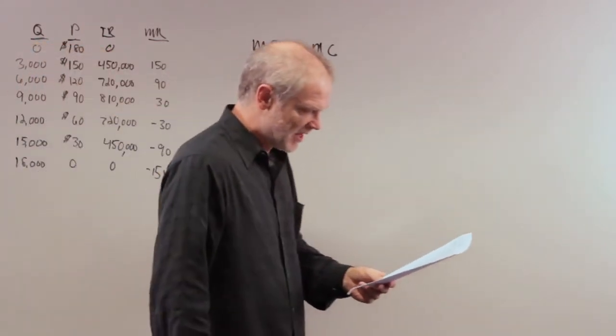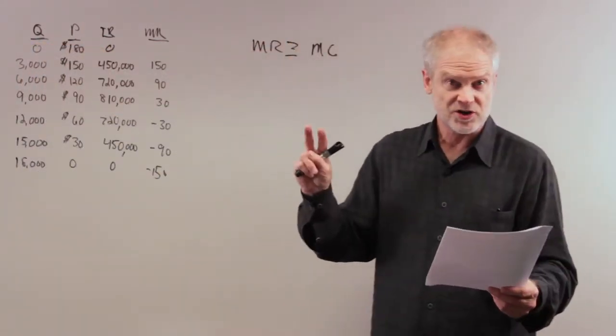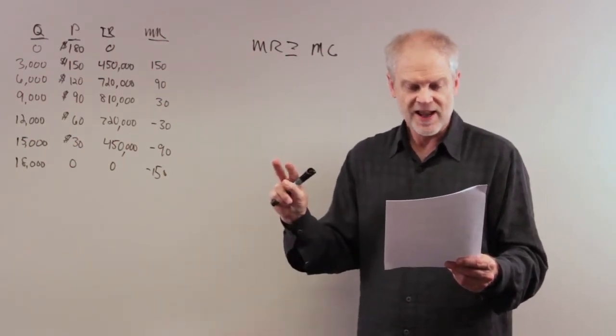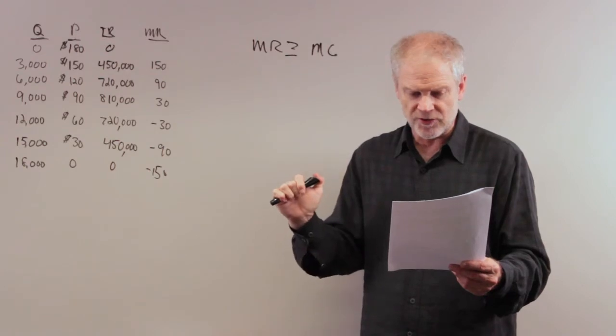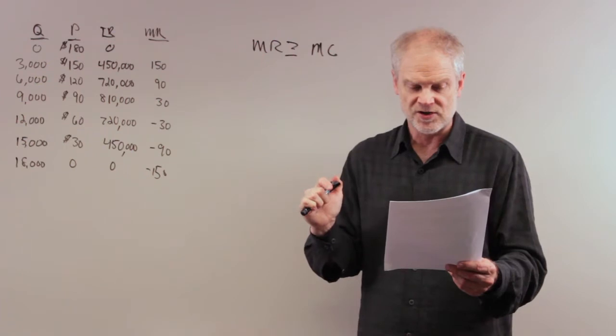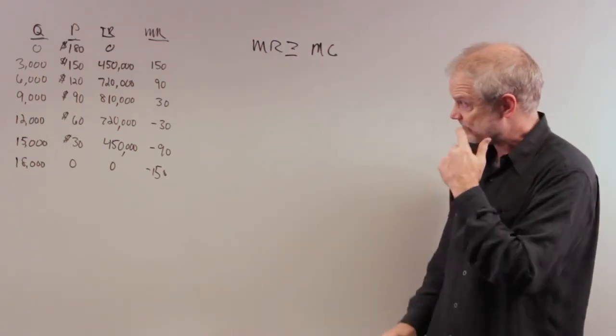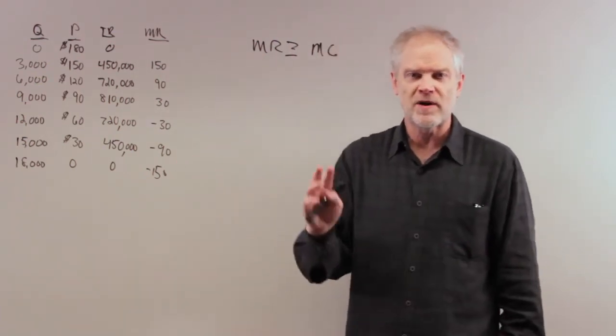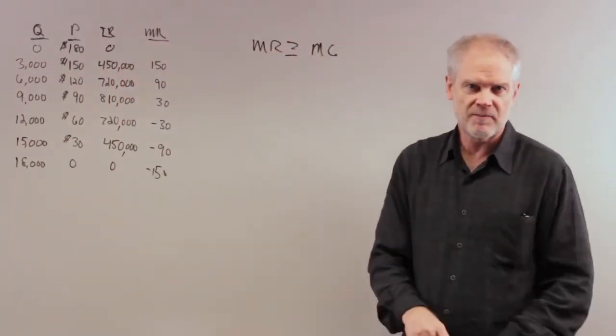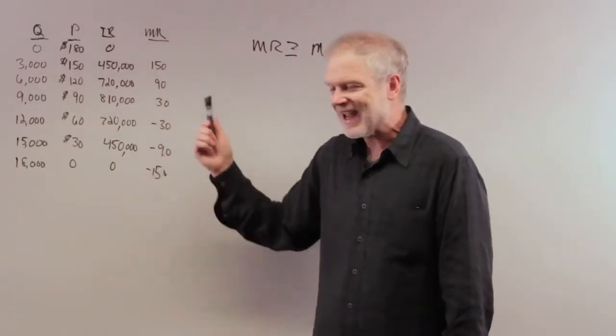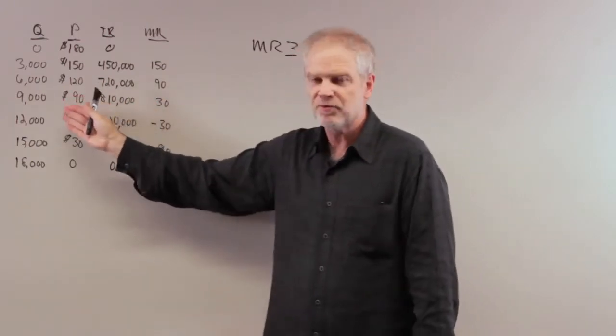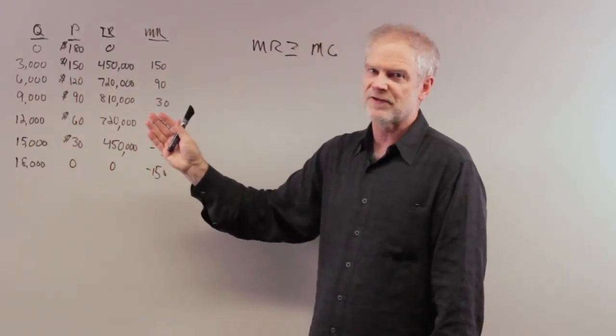Question number two assumes there are two digital TV companies operating in this market. If they collude on the quantity of subscriptions sold and the price charged, what will their agreement stipulate? This is no longer one firm but two—think Time Warner Cable and some other competitor. They get together and collude.